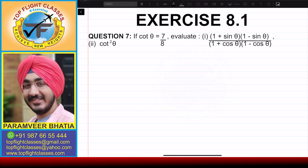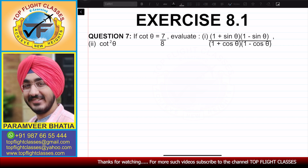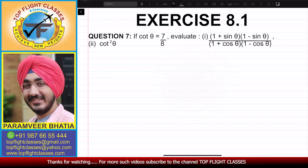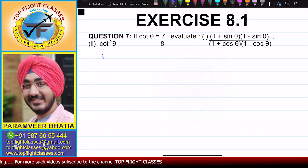In this video, we are going to solve question number 7 of exercise 8.1. Question number 7 says: if cotθ is equal to 7 by 8, evaluate — first part: (1 + sinθ)(1 − sinθ) divided by (1 + cosθ)(1 − cosθ), and second part: cot²θ. Now let's see the first part.